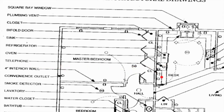Telephone jack — a little triangle pointing at the wall represents a telephone jack where you would plug a landline in for a telephone, if any of you even have those. Interior wall — two lines running parallel to each other, typically four to five inches wide or thick, would be the wall.